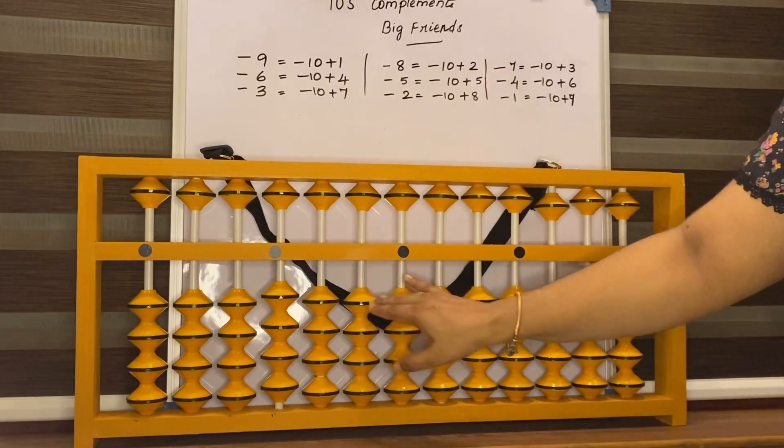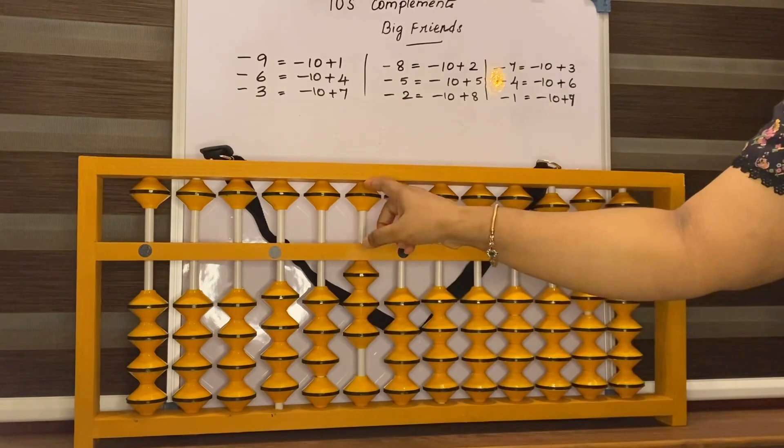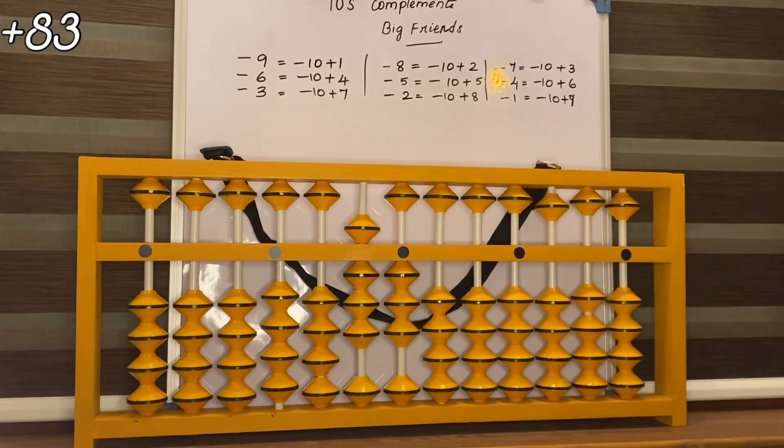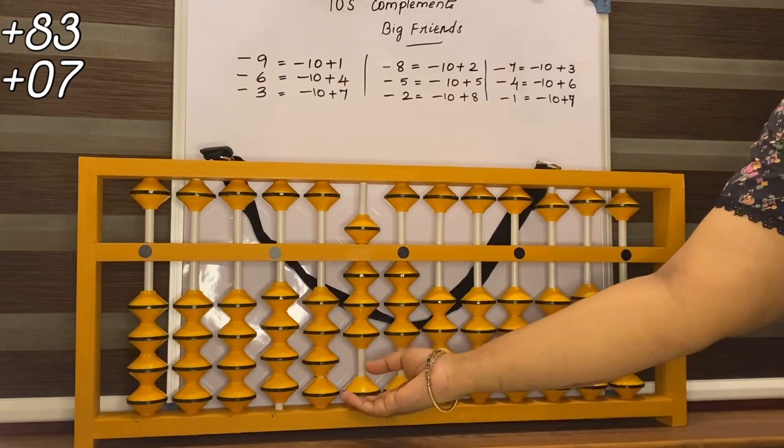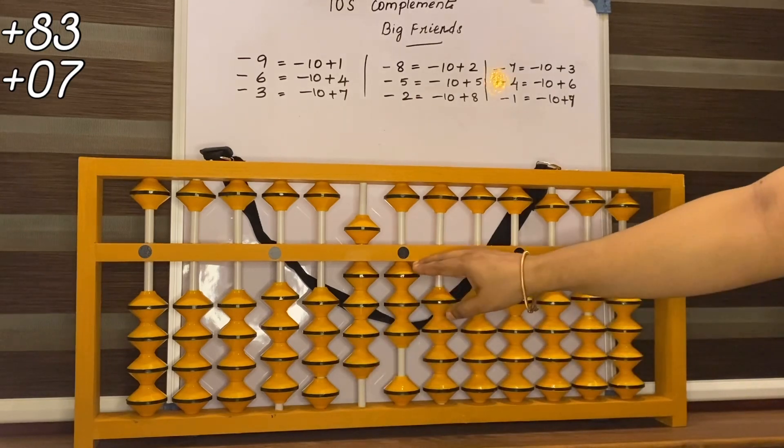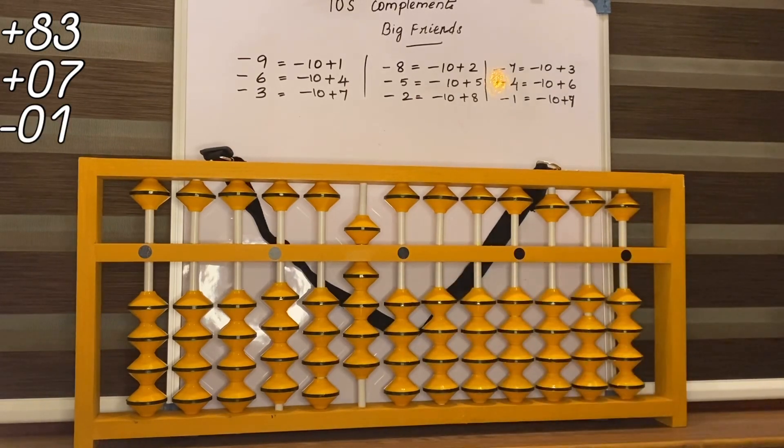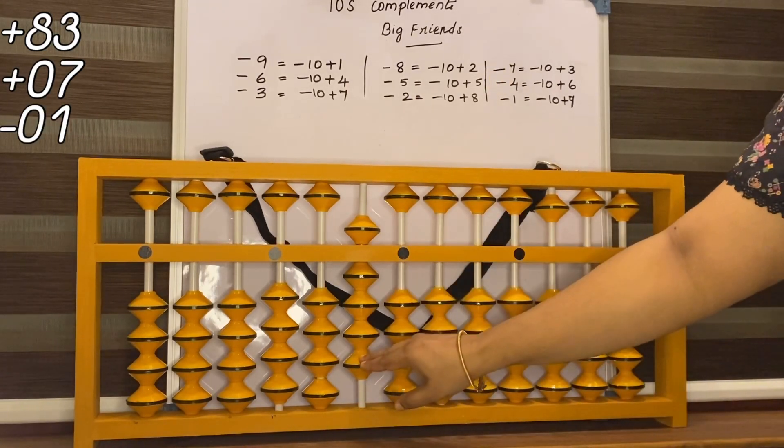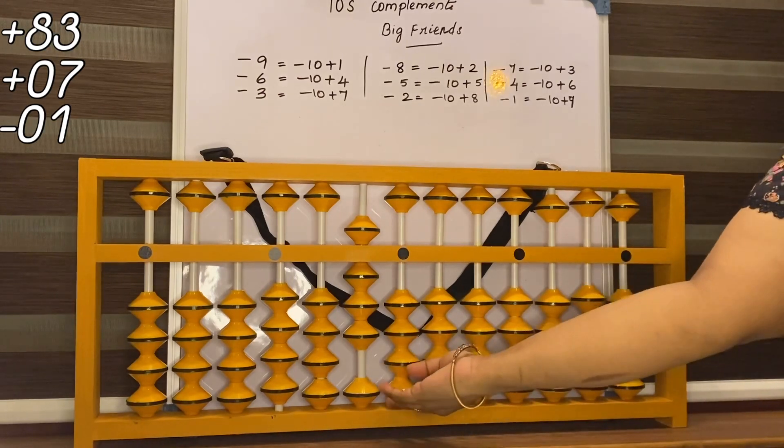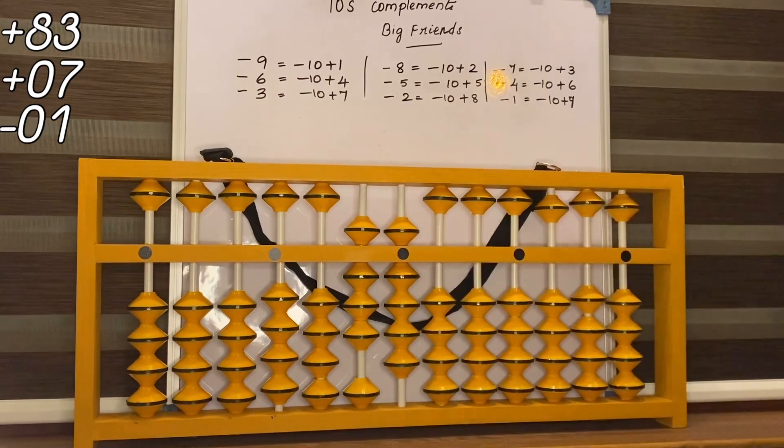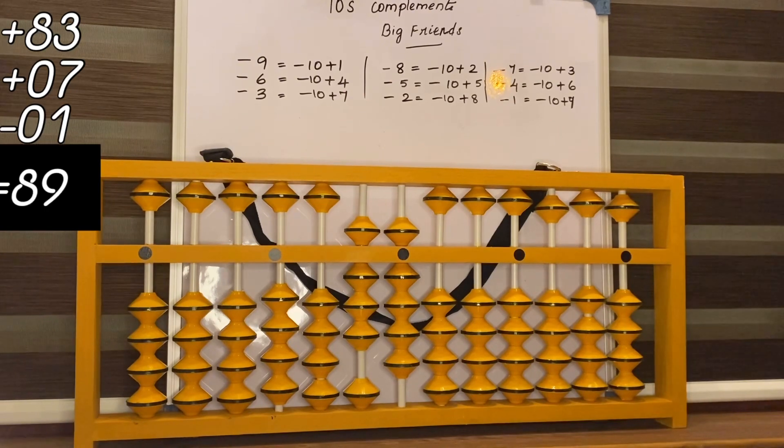Set 0. 83, 7. Add 10, 7's friend 3. Less 1. Less 10, his friend, add 9. That is 89.